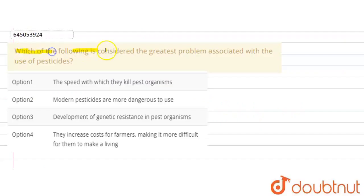The question is: Which of the following is considered the greatest problem associated with the use of pesticides? The speed with which they kill pest organisms, modern pesticides are more dangerous to use, development of genetic resistance in pest organisms, they increase costs for farmers making it more difficult for them to make a living.